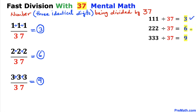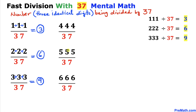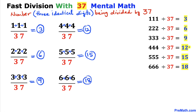Now for the next three numbers divided by 37, we do exactly the same. Four plus four plus four gives us 12. Five plus five plus five equals 15. And six plus six plus six gives us 18. So our answers for this group are 12, 15, and 18.